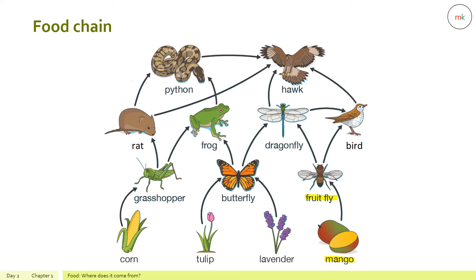In a more complex food chain: mango is eaten by a fruit fly, which is eaten by a dragonfly or bird, and either can be eaten by a hawk. A butterfly takes nectar from tulip and lavender, then can be eaten by a frog or dragonfly, and the dragonfly by a hawk. If a frog eats the butterfly, the frog can be eaten by a python, which is eaten by the hawk. Corn is eaten by a grasshopper, which is eaten by a rat or frog, and either can be eaten by a python, then the hawk. The hawk sits at the top of this food chain.